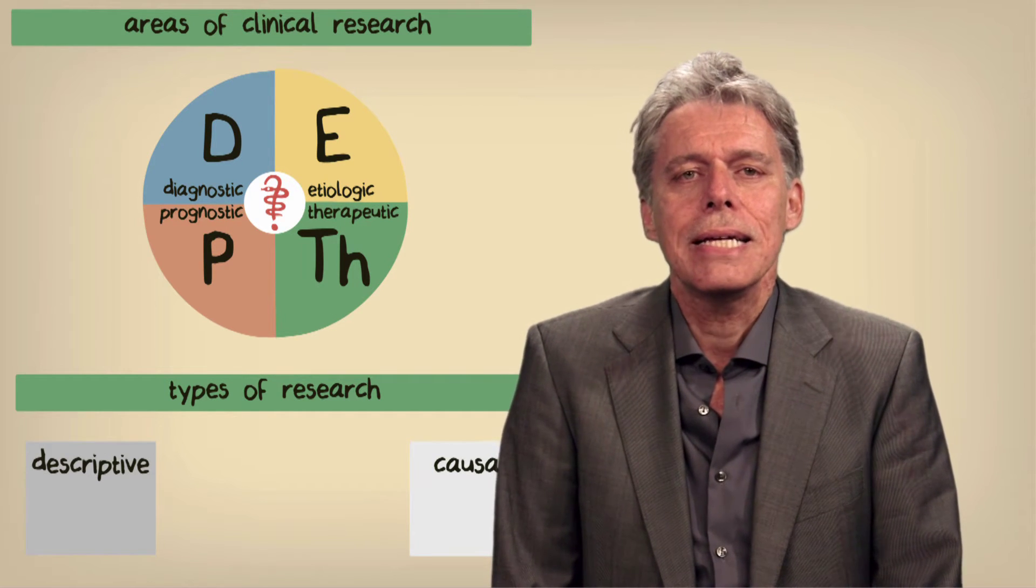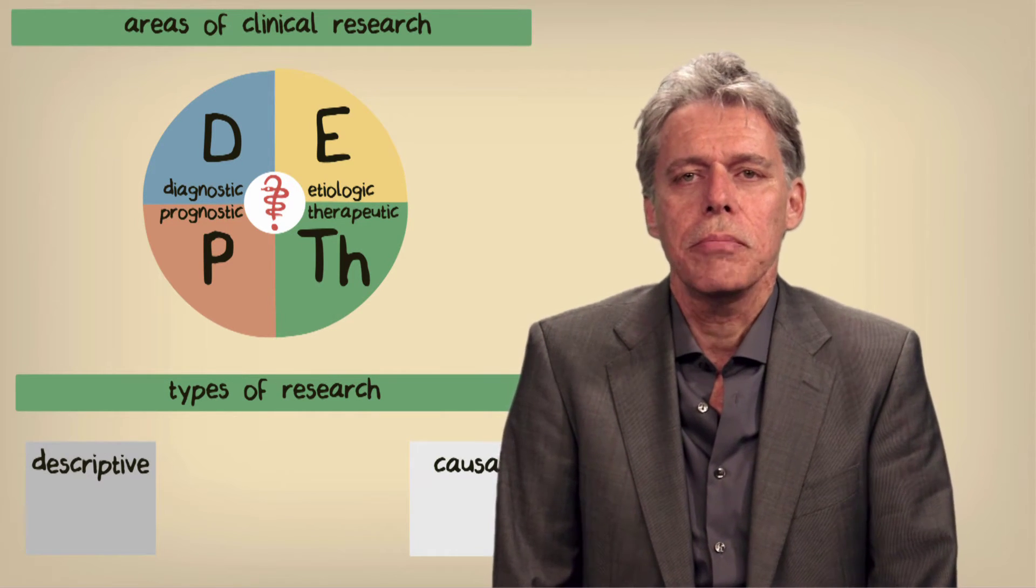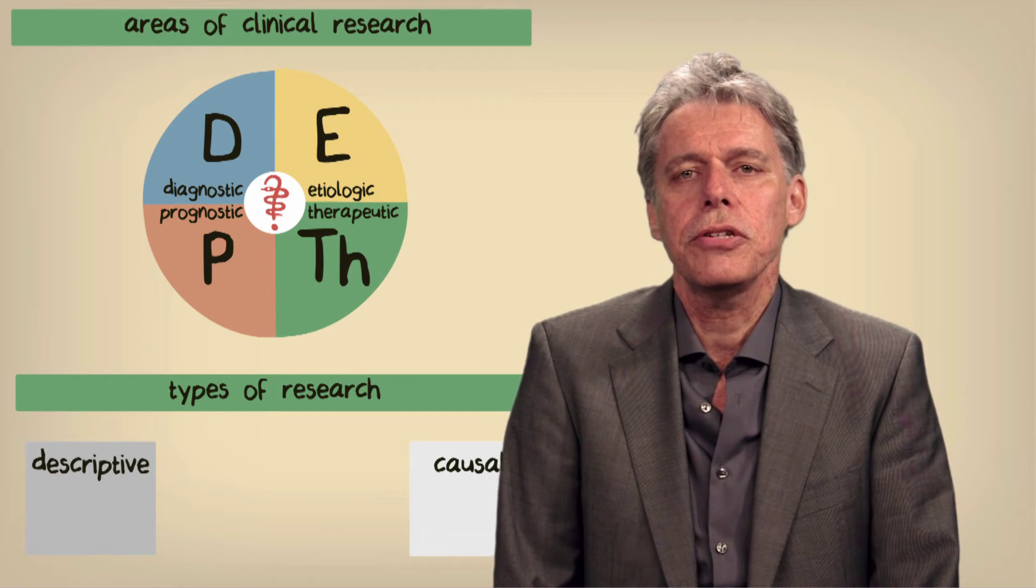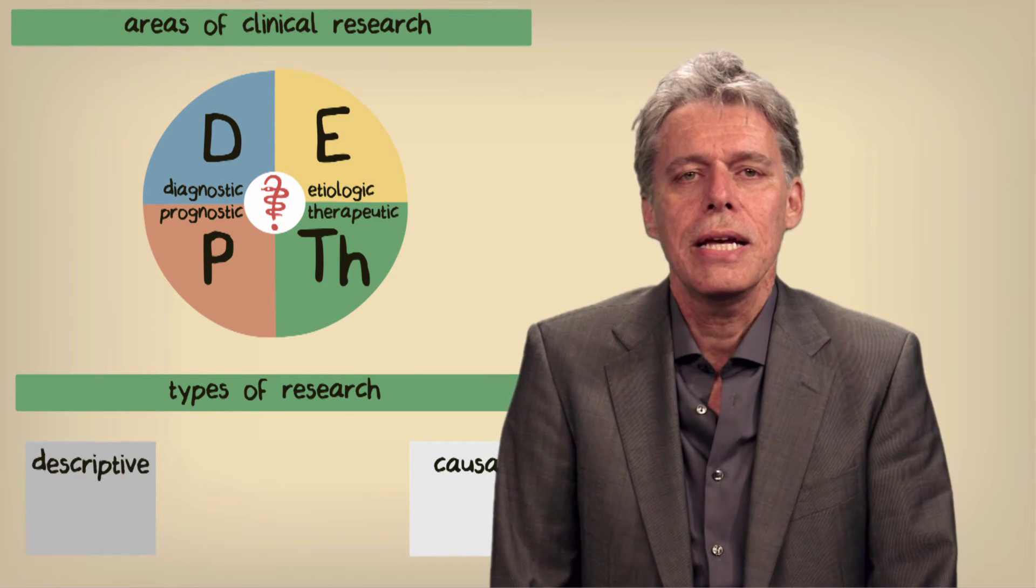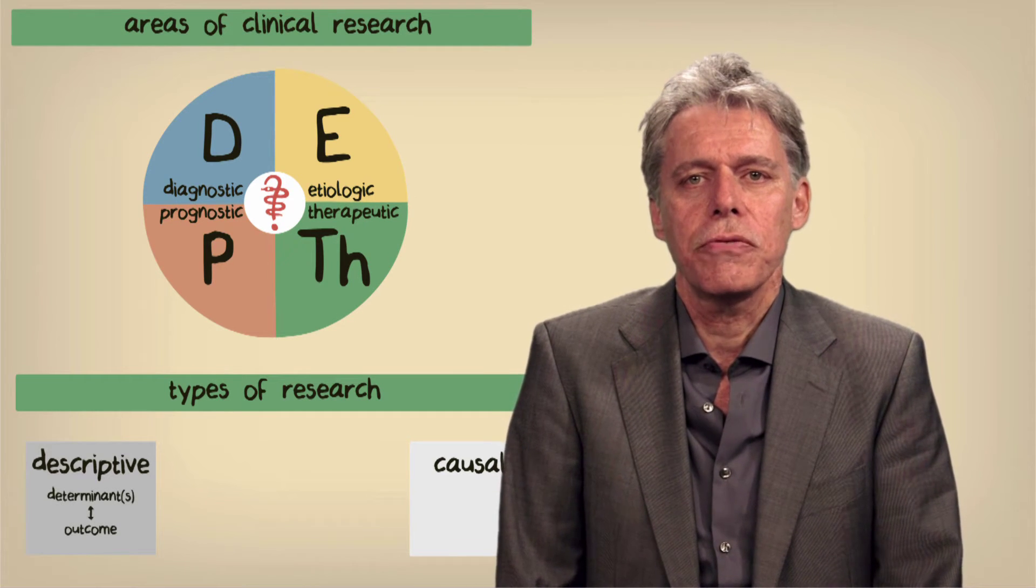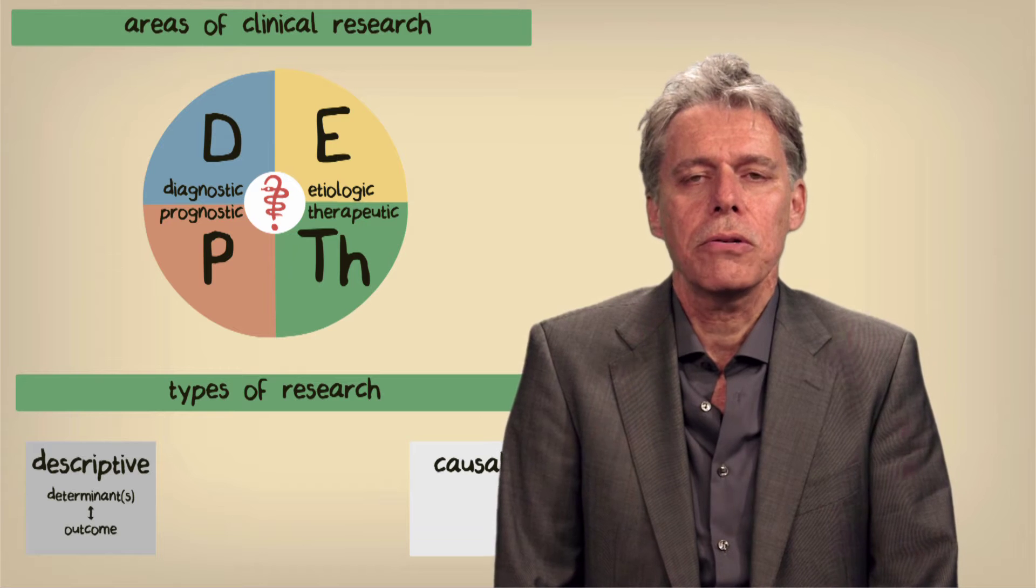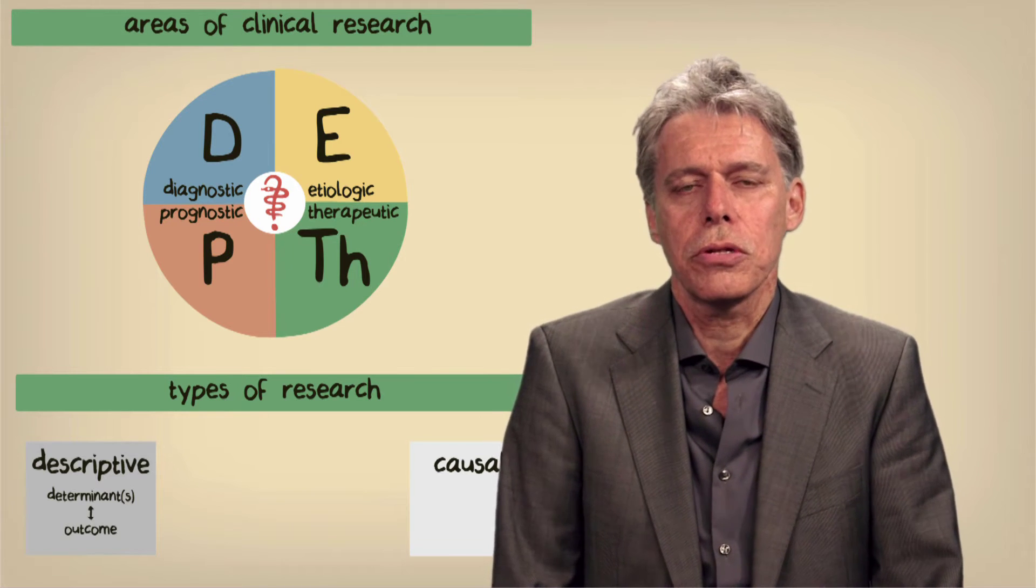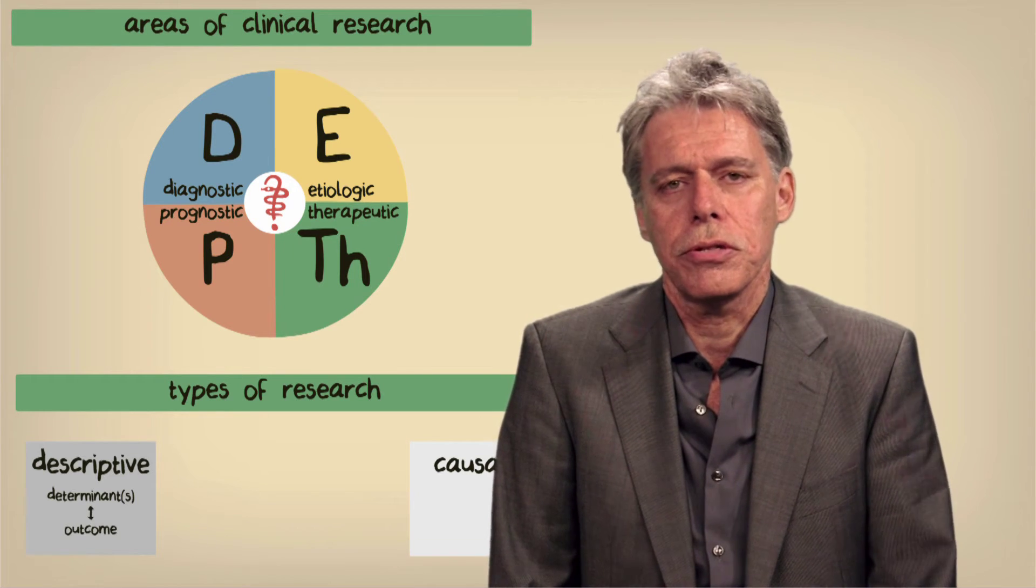Simply put, in descriptive research, the main aim is to describe a relationship between some determinants and a clinical outcome, whereas in causal research, the main aim is to find out whether the clinical outcome is directly caused by the determinant you're interested in.